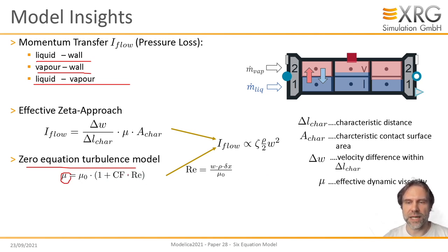Then you use this classic approach that the force is proportional to a velocity gradient times the dynamic viscosity times a characteristic contact surface. These two quantities you need from the spatial distribution of the phases. This approach gives you effectively a zeta times velocity squared approach that you know from conventional models. And it allows you in a consistent way to model all these interactions.